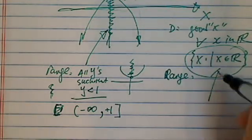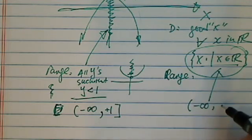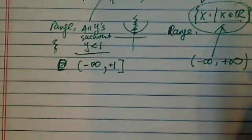For this interval notation on the domain, this is the set notation and if you want to write in interval notation, you have minus infinity to positive infinity.